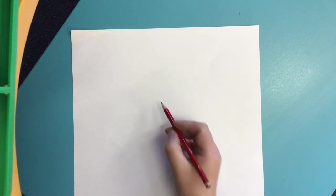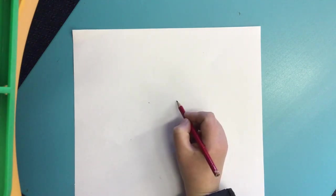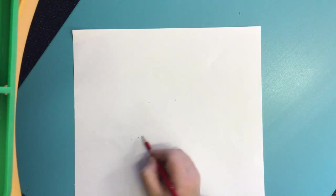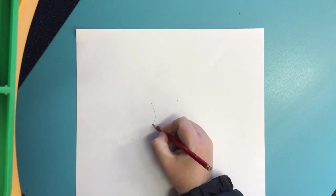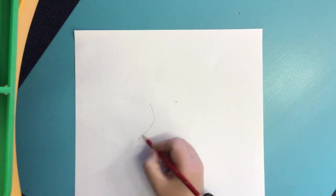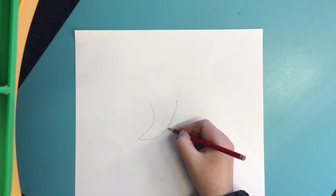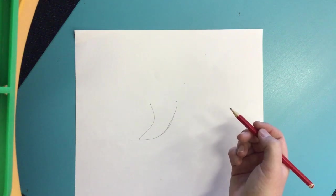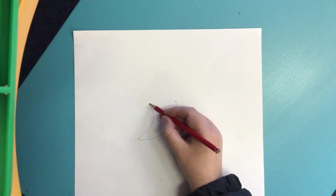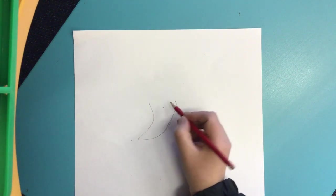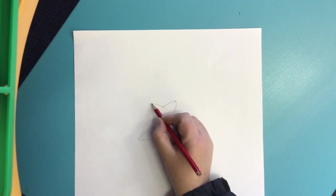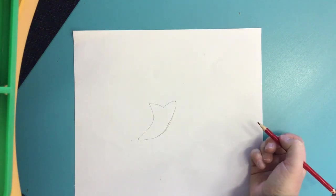We're going to start with the tongue first. Do two lines like this, and you want the tongue to be a bit pointy, coming down and then back up. Because you've done it in pencil, you can always fix up your mistakes. Then put a line in the middle, and that's where your V is for the start of your mouth.